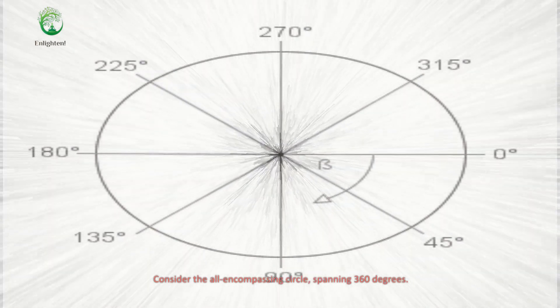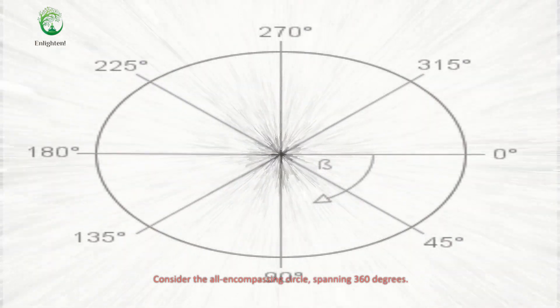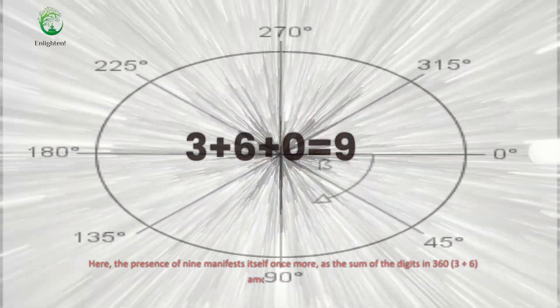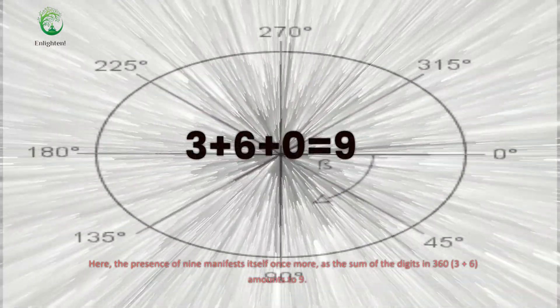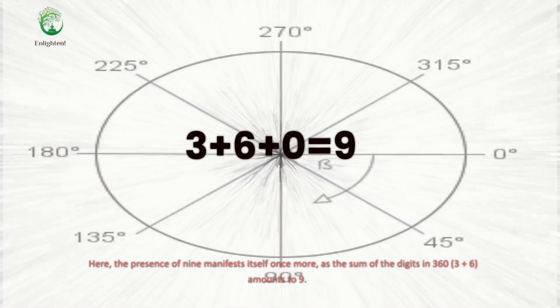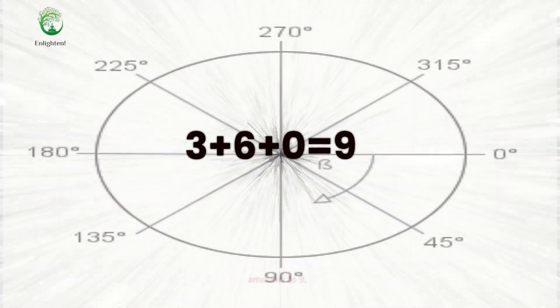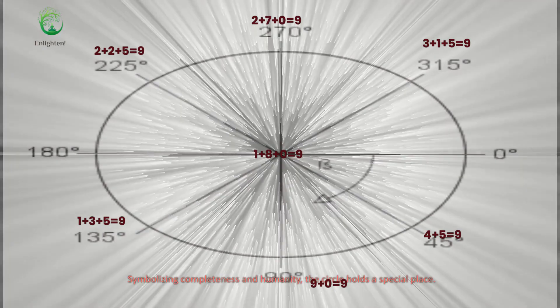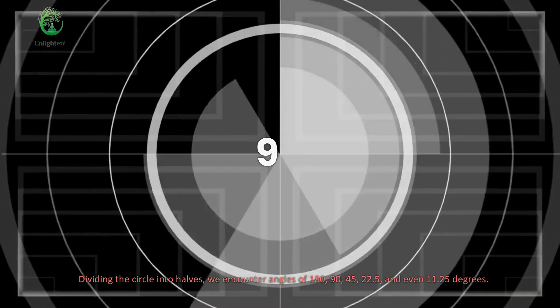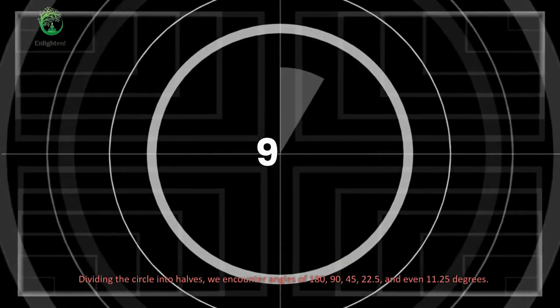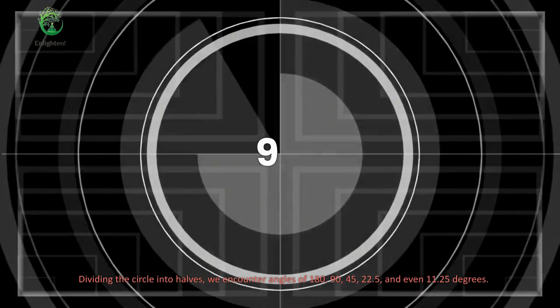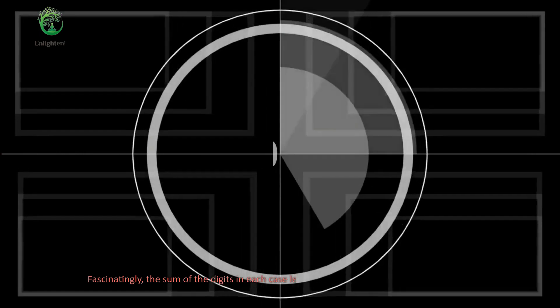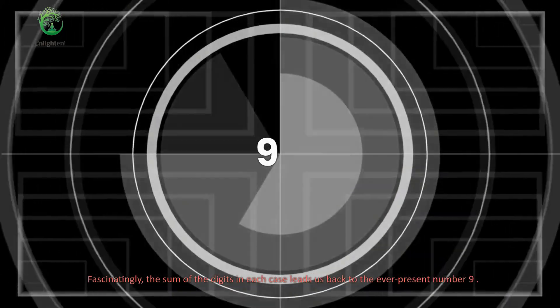Consider the all-encompassing circle, spanning 360 degrees. Here, the presence of 9 manifests itself once more, as the sum of the digits in 360, 3 plus 6, amounts to 9. Symbolizing completeness and humanity, the circle holds a special place. Dividing the circle into halves, we encounter angles of 180, 90, 45, 22.5, and even 11.25 degrees. Fascinatingly, the sum of the digits in each case leads us back to the ever-present number 9.